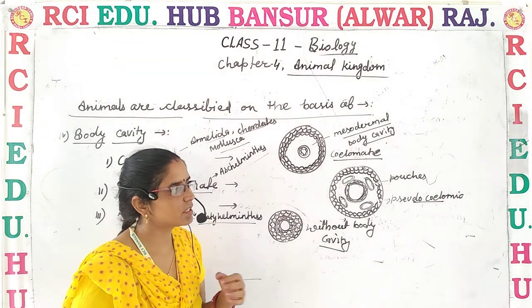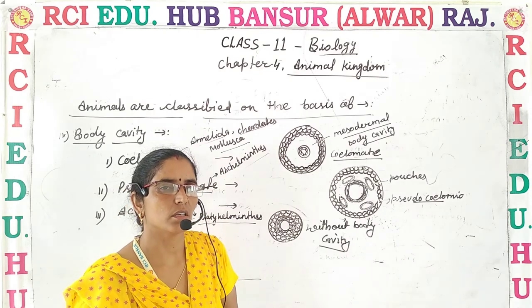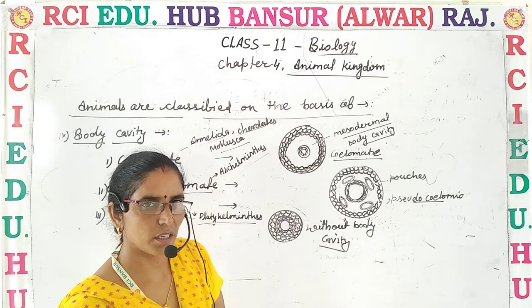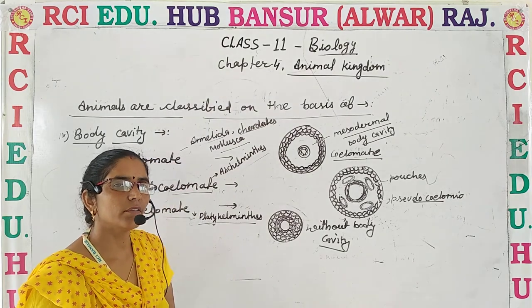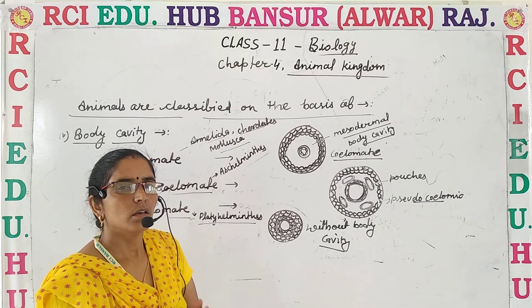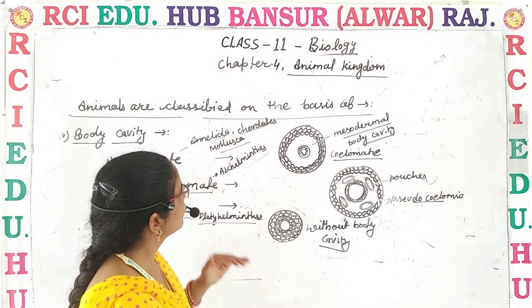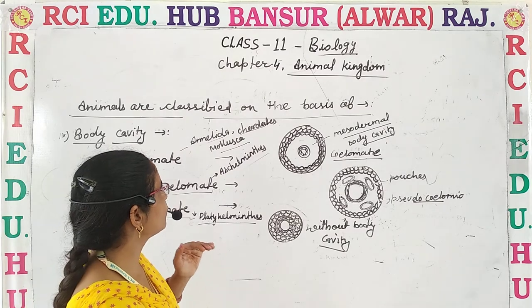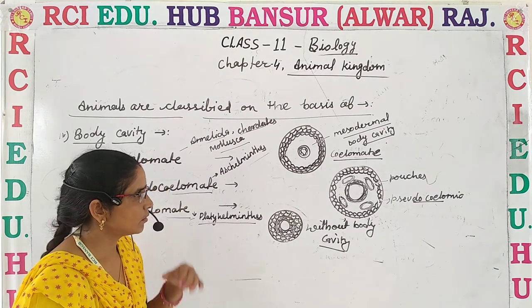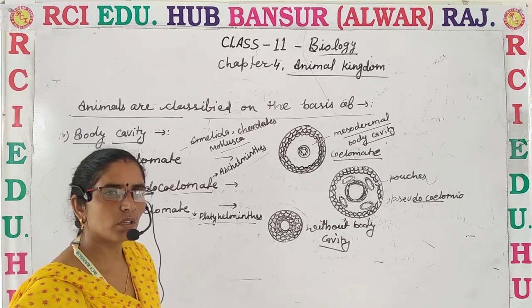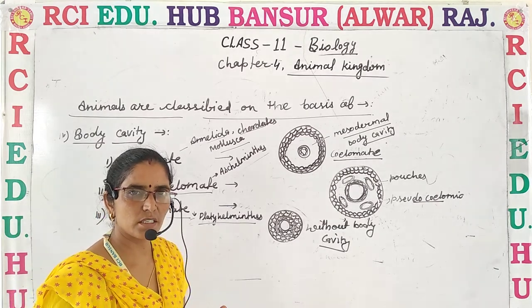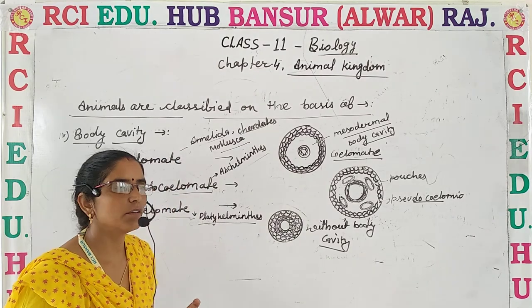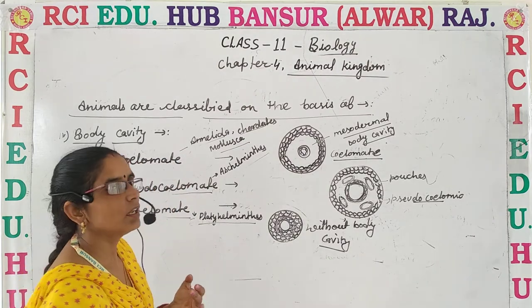Overall, what we discussed in the introduction is that there are large varieties — millions of species of animals — described. So, to give them a systematic classification, we classified the animals on the basis of four major criteria: one, level of organization; two, symmetry; three, germ layers; and four, body cavity.